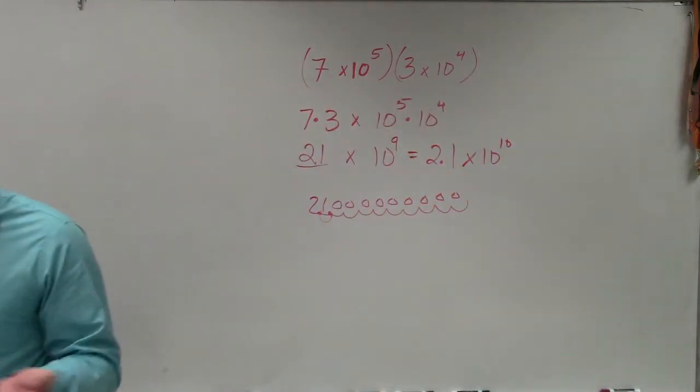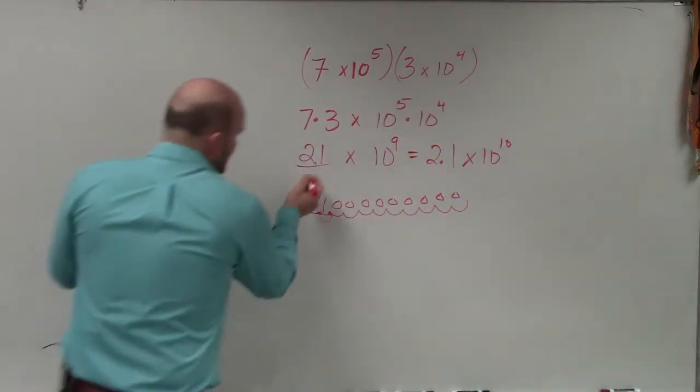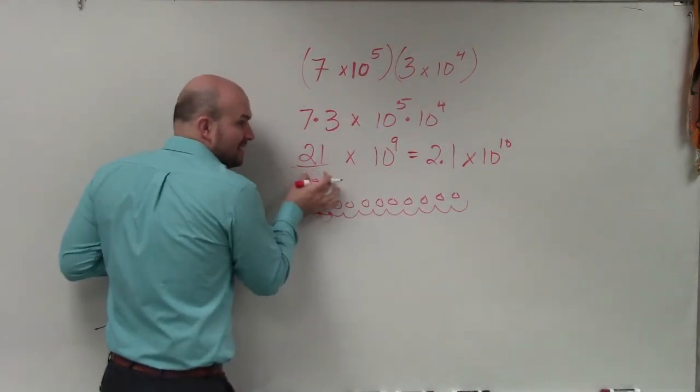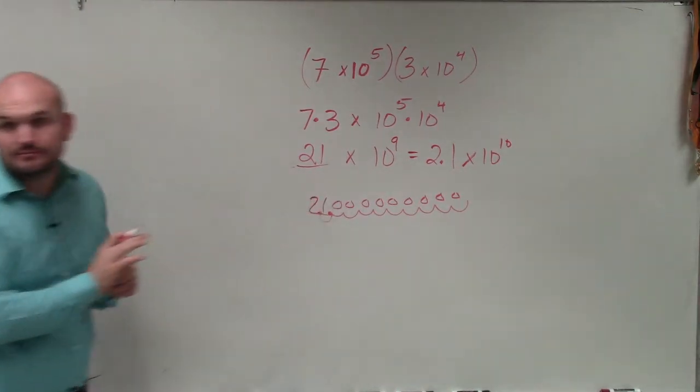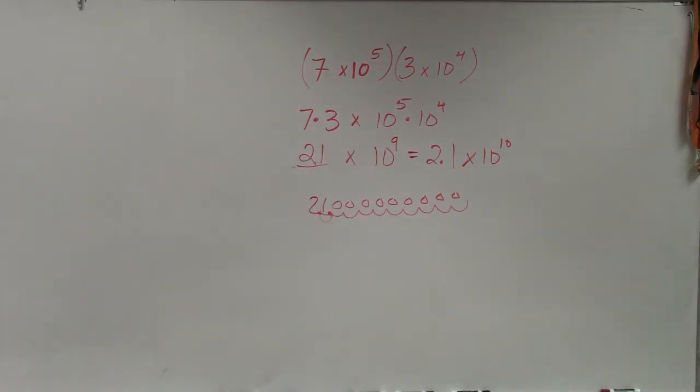Again, whenever you're multiplying and dividing, this number, your a, what we call it sometimes, has to be between 1 and 10. OK? Has to be between 1 and 10.